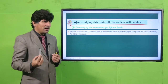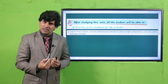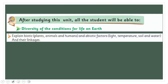After this session, today's class target is what we have learned in today's lesson — what you have already read in your book. We will explain biotic factors: plants, animals, and humans; and abiotic factors, for example, light, temperature, soil, and water. Beside this, we will also study the linkages.